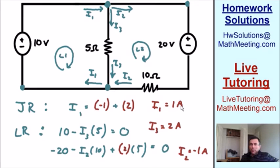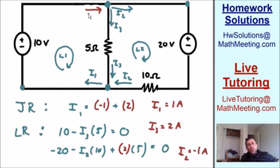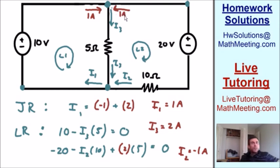Now that I2 equals negative 1 amp, we substitute negative 1 everywhere we see I2. In the first equation, we can now solve for I1: I1 equals negative 1 plus positive 2, which equals positive 1 amp. The positive value confirms we chose the right direction for I1. So I3 equals 2 amps pointing down, I1 equals 1 amp going in the correct direction, and I2 is a positive 1 amp going in the opposite direction from what we originally chose.